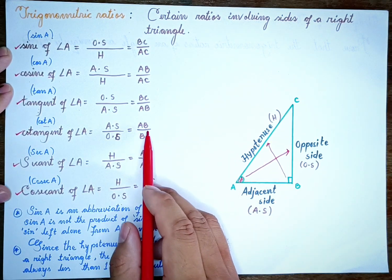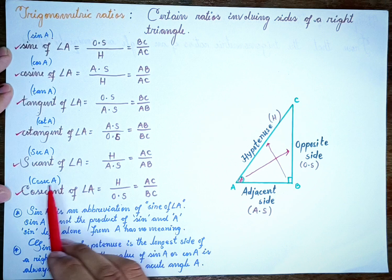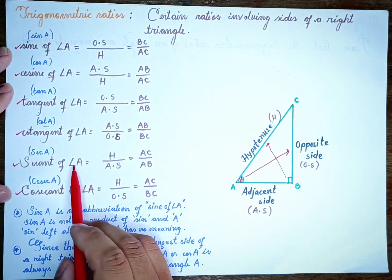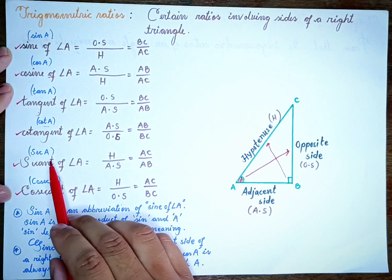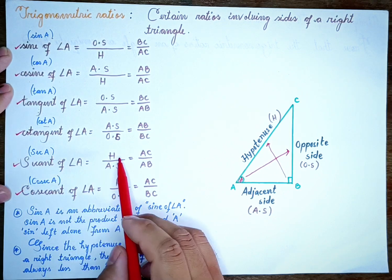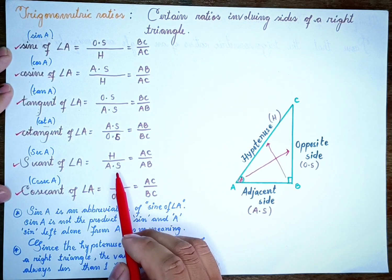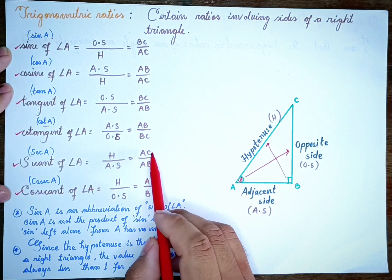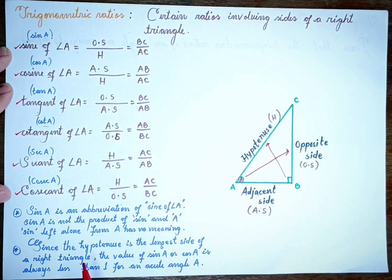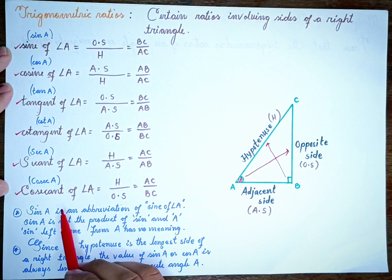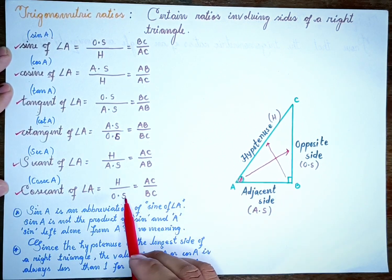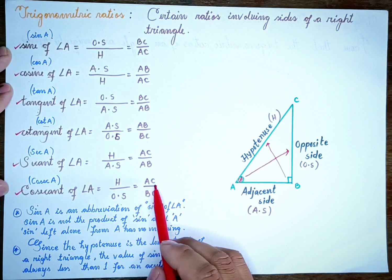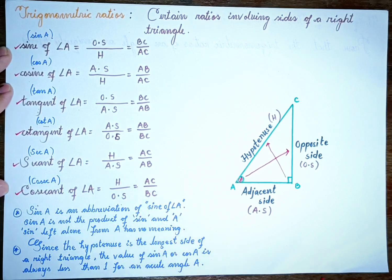Next is secant A, written as sec A. Secant of angle A can be found as the hypotenuse divided by the adjacent side, which is AC divided by AB. Then cosecant of A can be the hypotenuse divided by the opposite sine, written as cosec A, which is AC divided by BC.